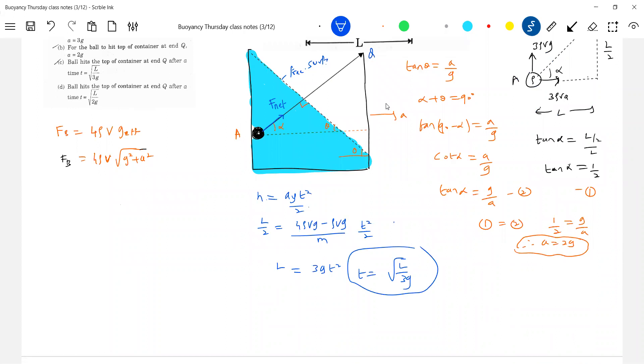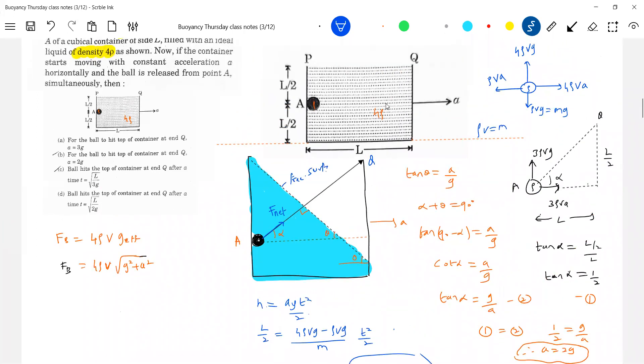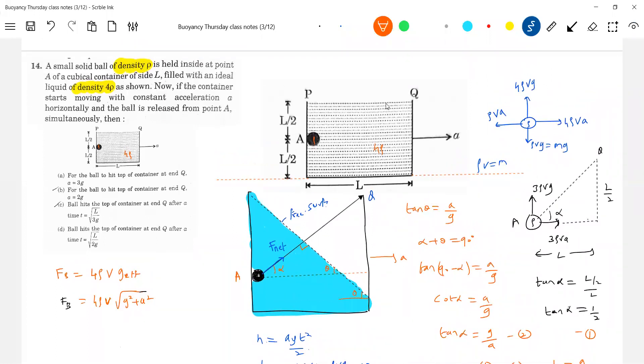Now what is this? This acceleration along y axis. Acceleration along x axis also you can calculate. What is acceleration along x axis? 4 rho v a minus rho v a, this one. So this is the buoyant force acting along x axis. This is the buoyant force acting along y axis. This is a pseudo force. This is a weight. So this is what f_b along x axis. This is what f_b along y axis. This is pseudo force.